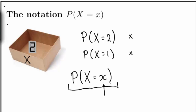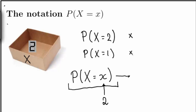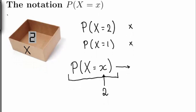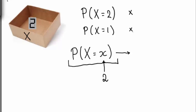So we can say that this expression, P, capital X, equal to small x, is a function of x. You feed a number into this function, such as 2, and the function returns a number — maybe 0.5 or whatever the probability is of seeing the number 2.